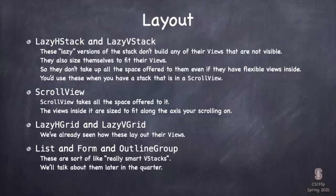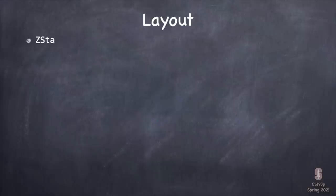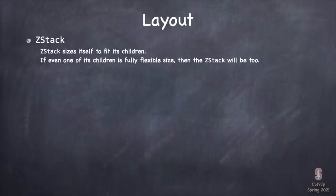LazyHGrid and LazyVGrid: we had plenty of examples of this in the demo — it's clear how they lay things out with grid items, columns, rows, and the adaptive layout. List, Form, and OutlineGroup are fantastic container views, sort of like really smart VStacks. We'll talk about those later in the quarter. ZStack just sizes itself to fit all of its children; if even one child is fully flexible, the ZStack becomes fully flexible too.